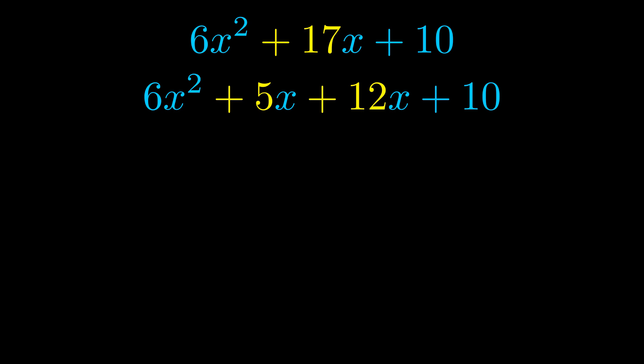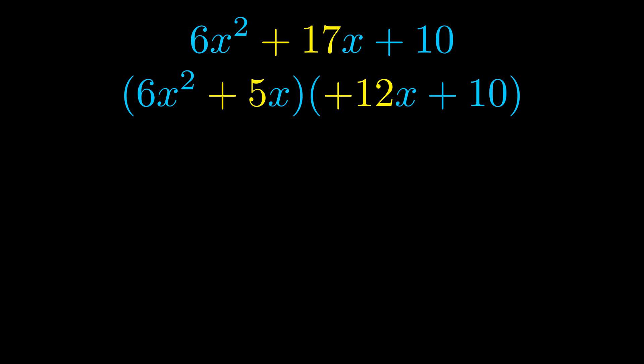Once we've done this, we go ahead and put parentheses around the first term and the last term. And we do that so that we can take the greatest common factor out of both terms.